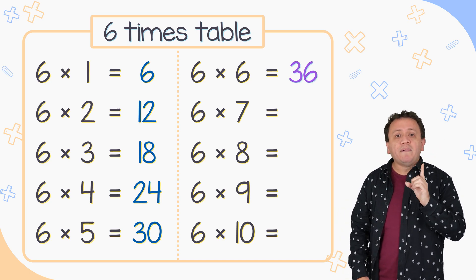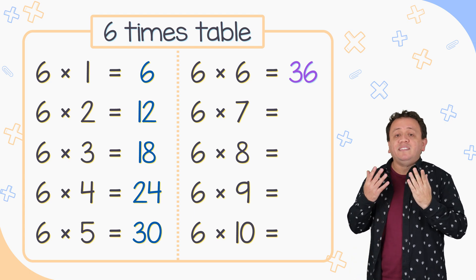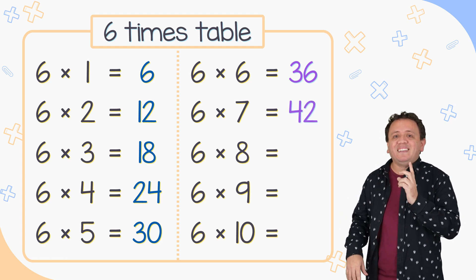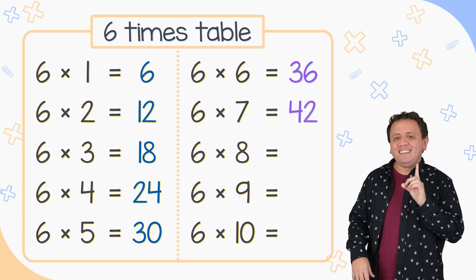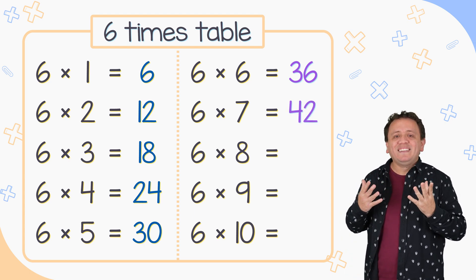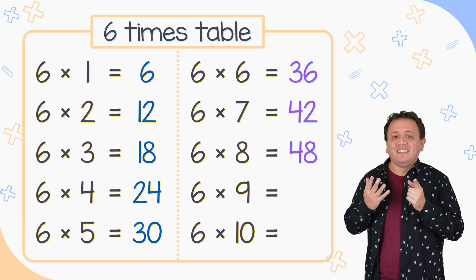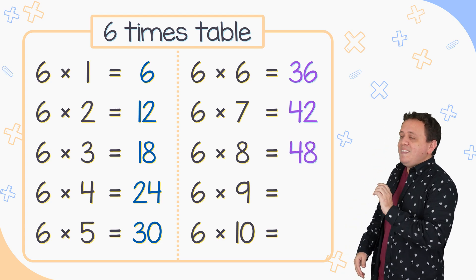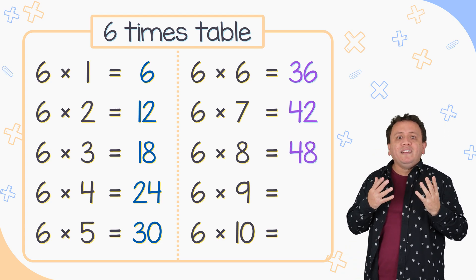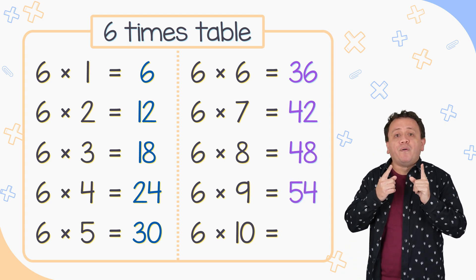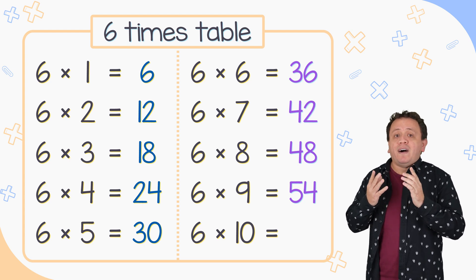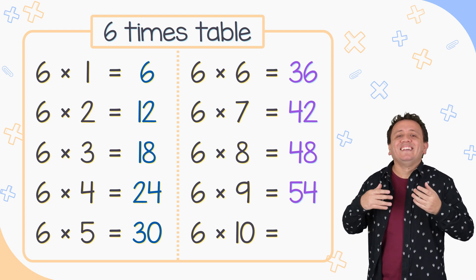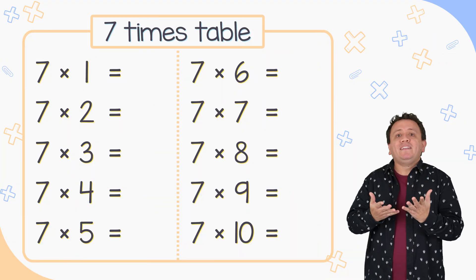6 times 7 is equal to 42. 6 times 8 equals 48. 6 times 9 equals 54. Finally, 6 times 10 equals 60.